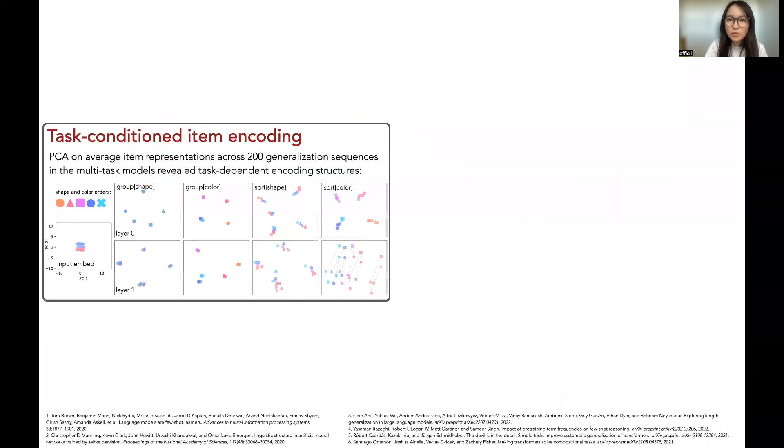Lastly, when we project the encoded item representations in different layers in the multitask models to lower dimensions, we see that they have different encoding structures under different tasks.